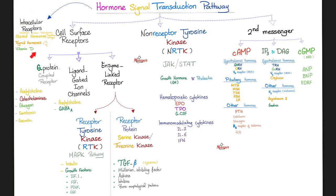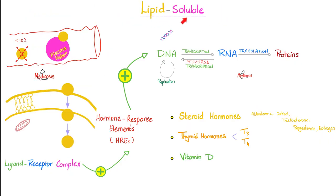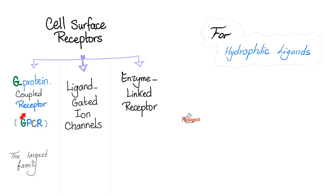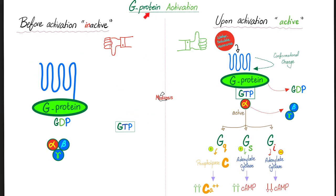Intracellular receptors: the hormone must be lipid soluble. It crosses the cell membrane, enters the cell, and forms a ligand-receptor complex. Hormone response elements are stimulated, activating DNA transcription and translation. This applies to steroid hormones — aldosterone, cortisol, testosterone, progesterone, and estrogens — as well as thyroid hormones and vitamin D. Cell surface receptors include G-protein coupled receptors, ligand-gated ion channels, and enzyme-linked receptors.